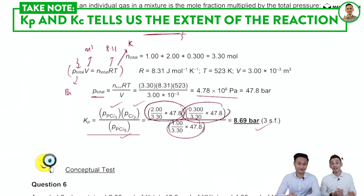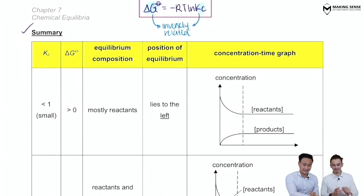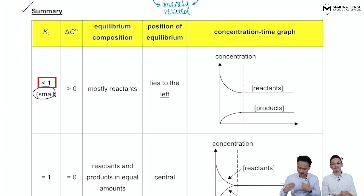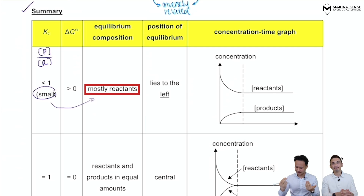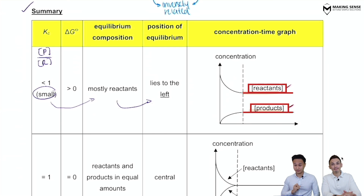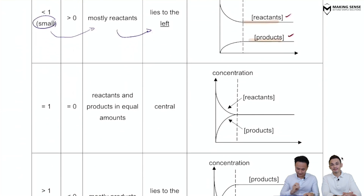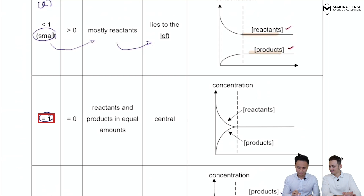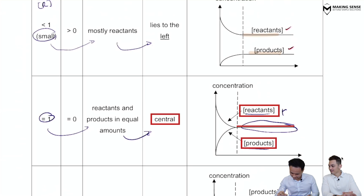Looking at this table: if Kc is less than one, there are mostly reactants at equilibrium, and the equilibrium position lies to the left. If Kc is greater than one, there are more products than reactants at equilibrium, and the position lies to the right. If Kc equals one, the concentrations of reactants and products are equal at equilibrium — their curves meet perfectly.